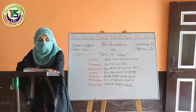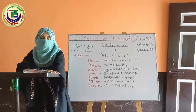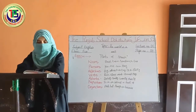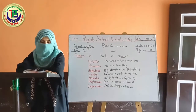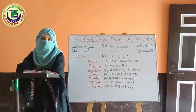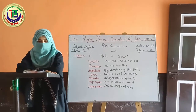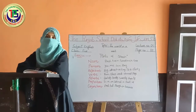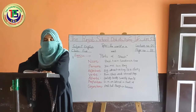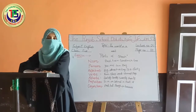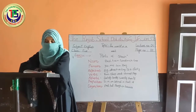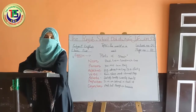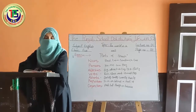First of all, I will tell you how many parts of speech there are and their definitions. There are eight parts of speech: noun, pronoun, adjective, verbs, adverbs, preposition, conjunctions, and interjections. The first part of speech is noun. What is a noun? A noun is a word or part of speech that describes the name of a person, place, or a thing.